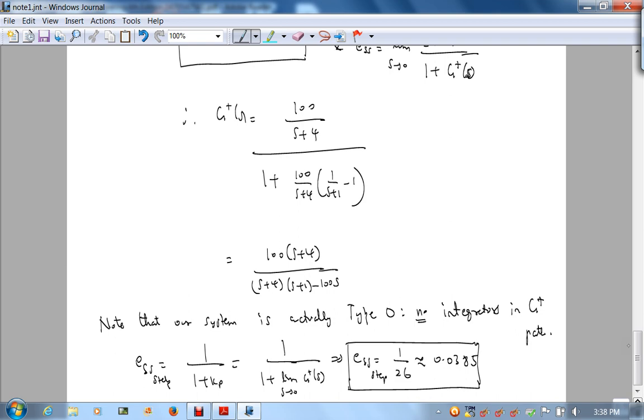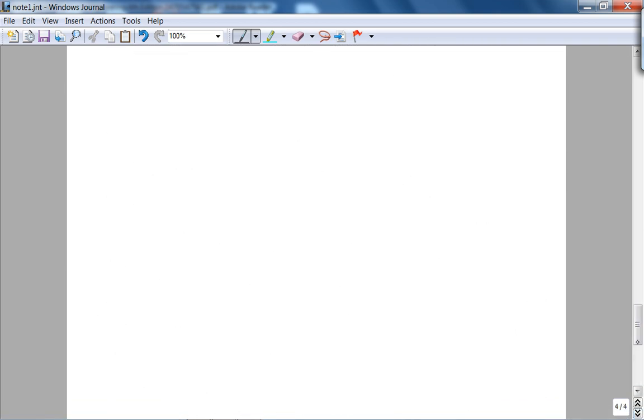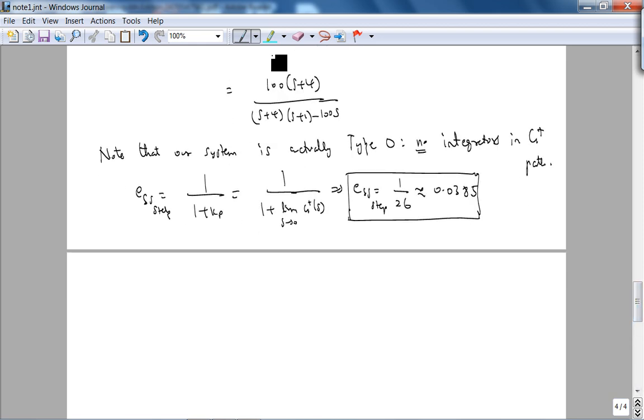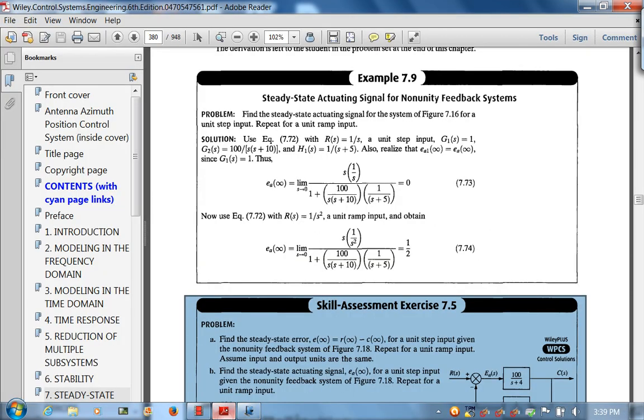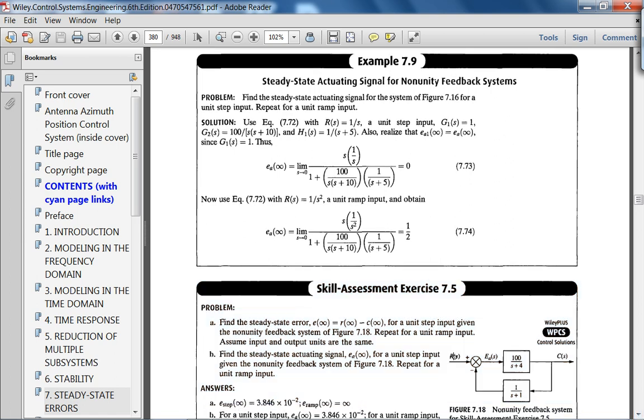And let's see, also, he's asking steady state error due to a unit ramp input. Actually, this is where the type of the system helps us. Since system is type 0, it cannot track a ramp. And you can do this mathematically, but I'll do it as an exercise. Steady state error due to a ramp tends to infinity, it cannot track a ramp. Let's see what the answer is. So for the first part, you get 0.0385 due to a ramp is infinity.